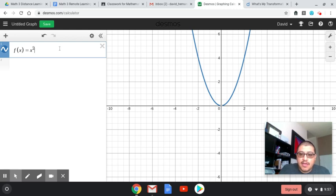Now from here, we know that if we add 1, the vertex, which was at 0, 0 before, is now at 1, 0. So adding a number after the x squared will move it up 1.